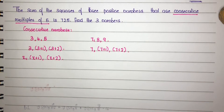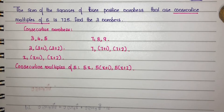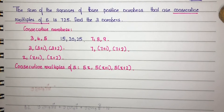Consecutive multiples of 5. Multiples of 5 means 5 into x, 5 into x plus 1, and 5 into x plus 2. Consider the first case: 3 into 5 is 15, 4 into 5 is 20, 5 into 5 is 25 — these are consecutive multiples of 5. In the second example, 35, 40 and 45 are consecutive multiples of 5.